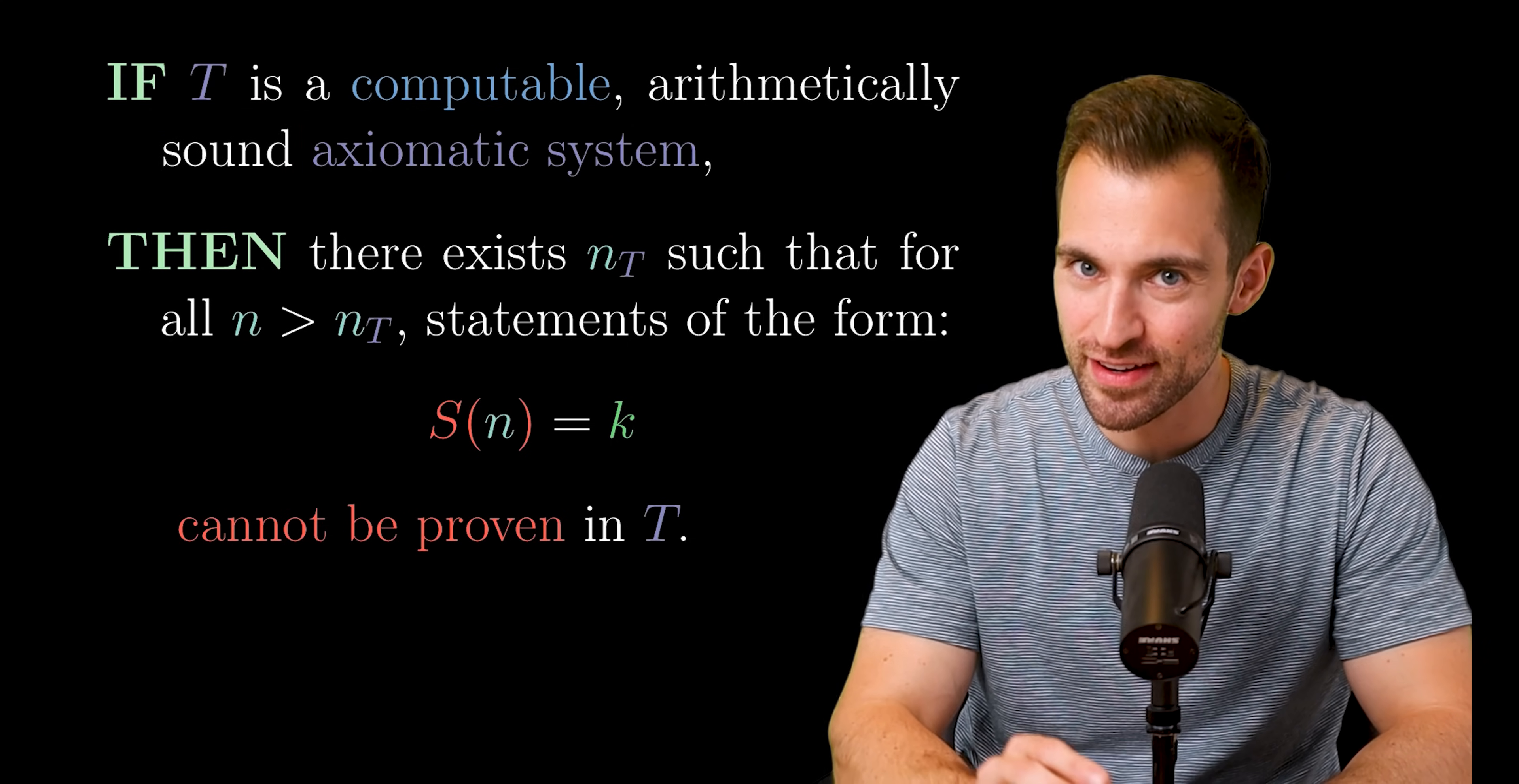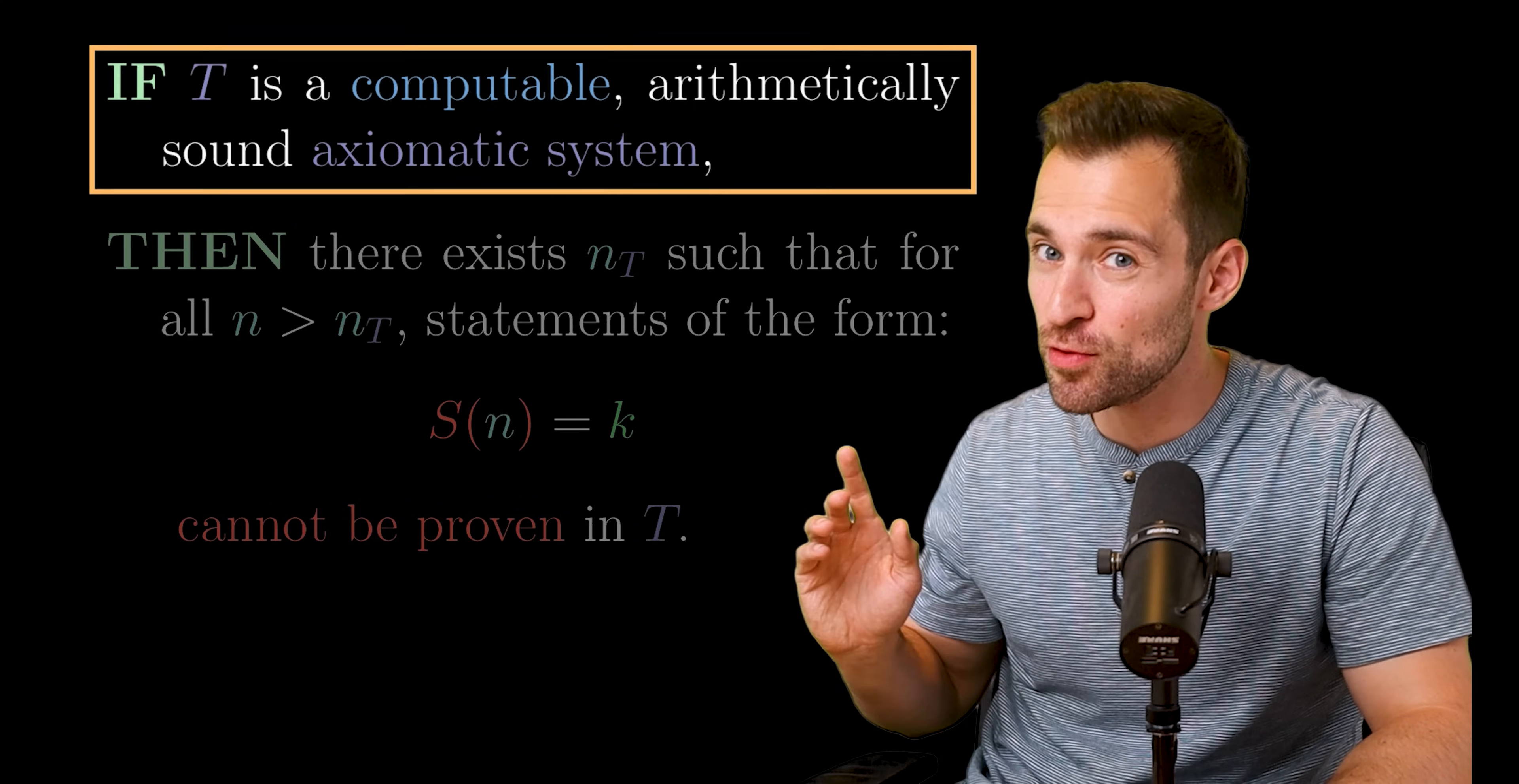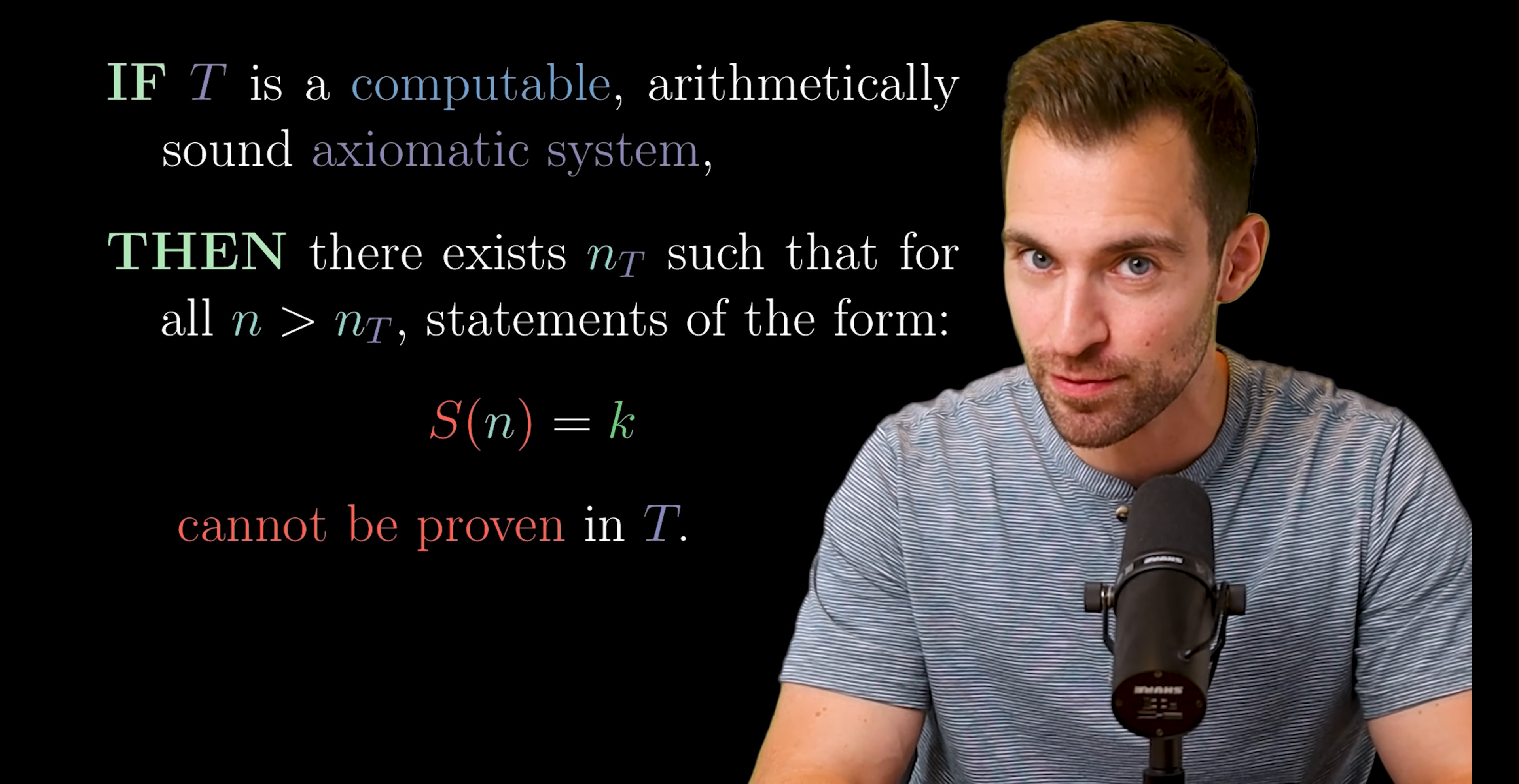Next, computable just means we can programmatically apply rules of deduction to produce theorems from axioms and other theorems. Arithmetically sound means the system is powerful enough to produce the natural numbers and the associated theorems we independently accept as true. Now here's the punchline. This statement applies to our modern foundations of mathematics. And so this will apply, which means our mathematics will never prove the busy beavers beyond a point. They are fundamentally unknowable.